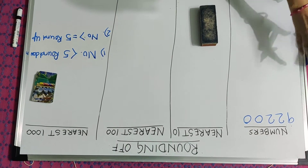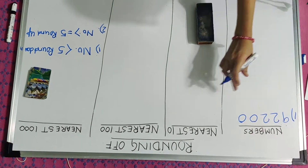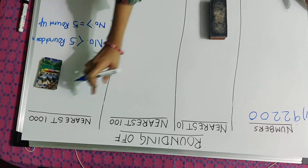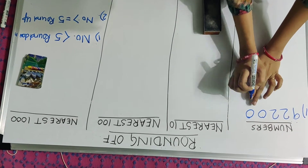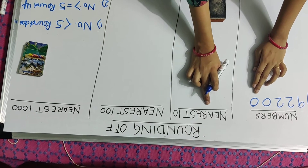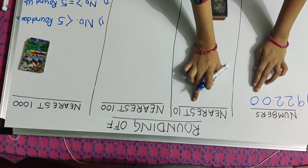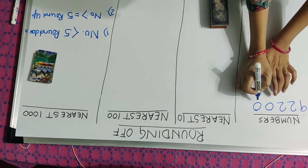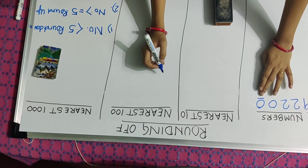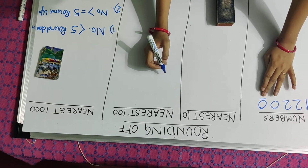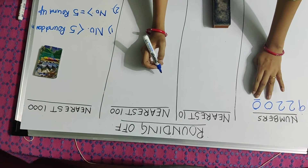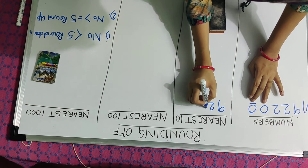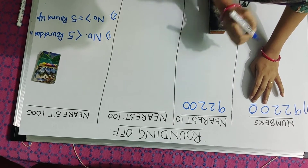I have to now round this number to its nearest 10, 100, and 1,000. My first activity is to convert this number to its nearest 10. To convert it to its nearest 10, I have to check its 1's place. Since the 1's place is less than 5, there will be no change in the 10's place. So my number will be 9, 2, 2, 0, 0.